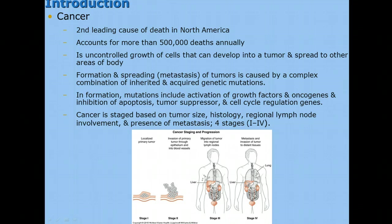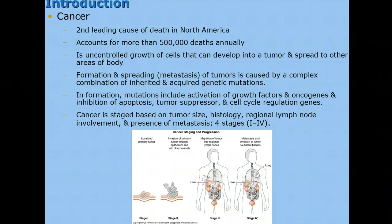Hello, this is Circulating Tumor Markers. Cancer is the second leading cause of death in North America. It accounts for more than 500,000 deaths annually. Cancer is an uncontrolled growth of cells that can develop into a tumor and spread to other areas of the body. There is a formation and spreading, also called metastasis or metastasizing, of tumors caused by a complex combination of inherited and acquired genetic mutations.